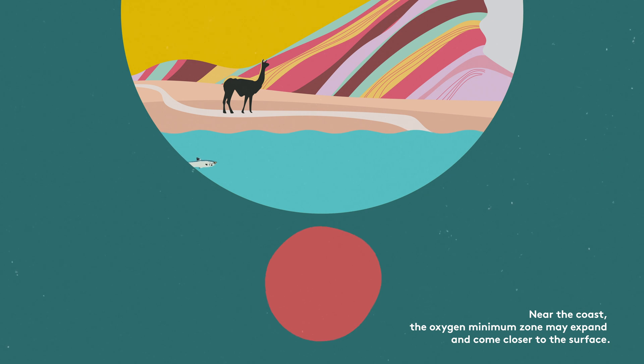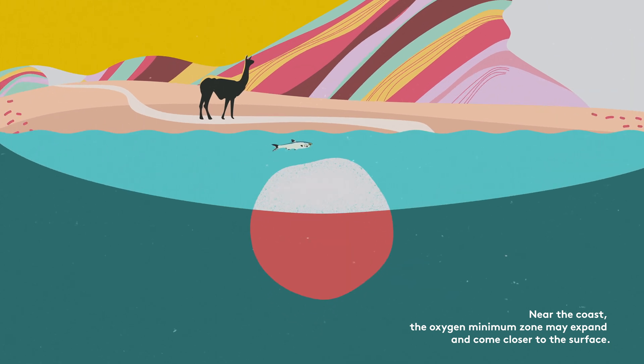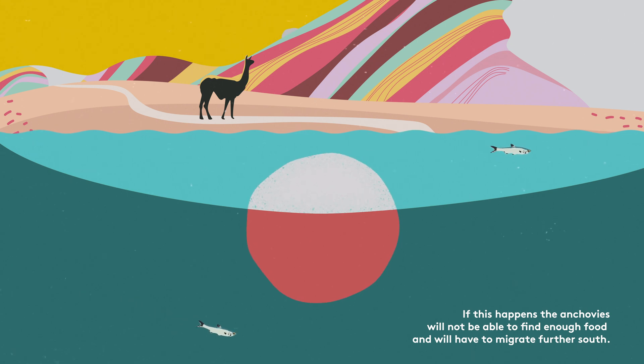Near the coast, the oxygen minimum zone may expand and come closer to the surface. If this happens, the anchovies will not be able to find enough food and will have to migrate further south.